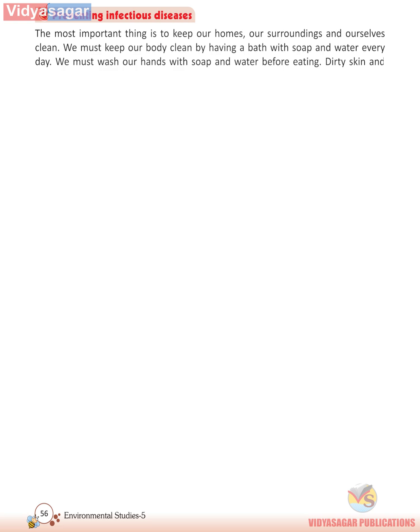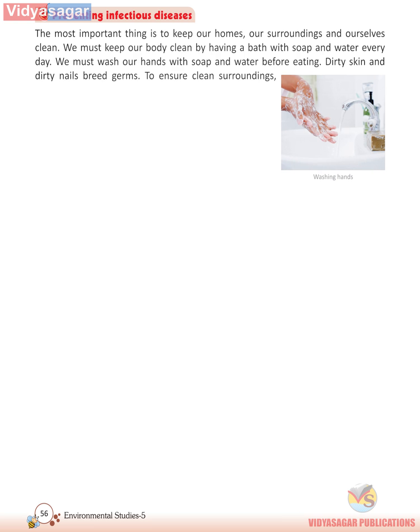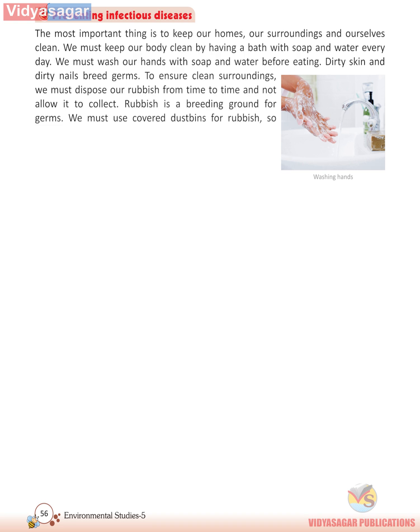Preventing infectious diseases — the most important thing is to keep our homes, our surroundings, and ourselves clean. We must keep our body clean by having a bath with soap and water every day. We must wash our hands with soap and water before eating. Dirty skin and dirty nails breed germs. To ensure clean surroundings, we must dispose of our rubbish from time to time and not allow it to collect. Rubbish is a breeding ground for germs. We must use covered dustbins so that we keep away flies, cockroaches, and other insects. We must clean the dustbins regularly and dry them in the sun.